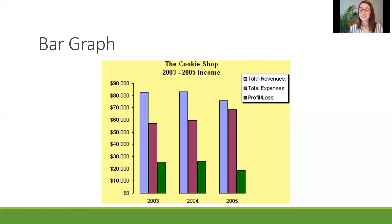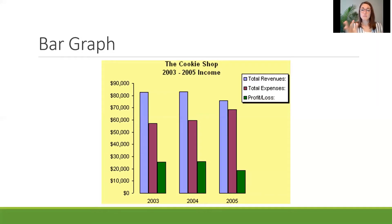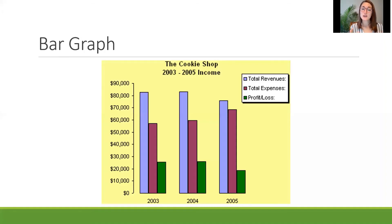Some questions you might see on a test might ask you to compare different years — like in which year did they have the least amount of profit? You could look at the green bars and see which one is the shortest. That would be 2005, so 2005 would be the correct answer. Anytime you're using a graph, before you try to answer anything, take inventory of everything: look at the bottom, look at the side measurements, look at the different colors and the key showing what they mean. Also check the title, because that'll give you a good clue as to what is going on.